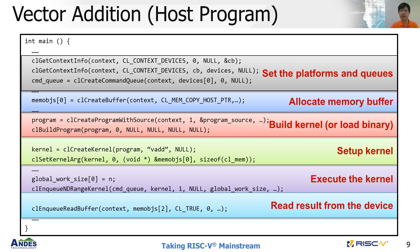This is the partial code of the OpenCL vector addition host program. The basic OpenCL host program has these steps: first, create the OpenCL context defining the running OpenCL device, and then create the command queue. Second, allocate the memory buffer for use. Third, invoke the OpenCL compiler to dynamically compile kernel programs or load the compiled kernel binary. Fourth, set the kernel to execute and its related arguments. Fifth, set the parallel dimension and dispatch the kernel on the device. Finally, read the result back from the device.